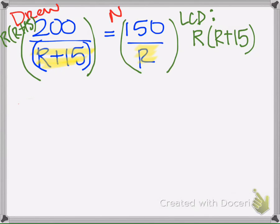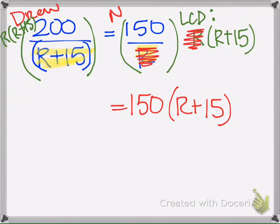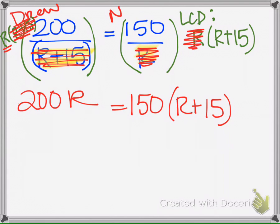Now what happens here is this R cancels out with this R and we're left with 150 and R plus 15. On this side this will cancel out with this and we're left with 200 and the R. Now we're going to simplify.